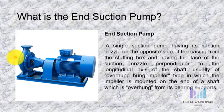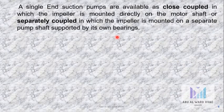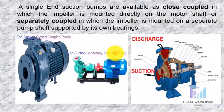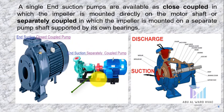It is usually the overhung impeller type, in which the impeller is mounted on the end of the shaft which overhangs from its bearing supports. Single end suction pumps are available as close coupled — where the impeller is mounted directly on the motor shaft — or separately coupled, where the impeller is mounted on a separate pump shaft supported by its own bearings. Here we can see the separately coupled pump.